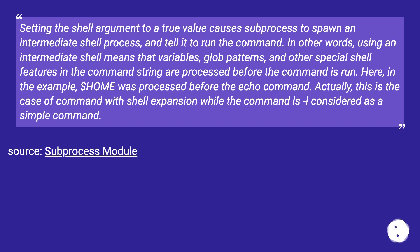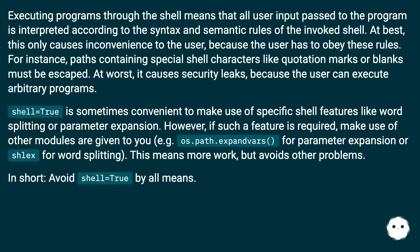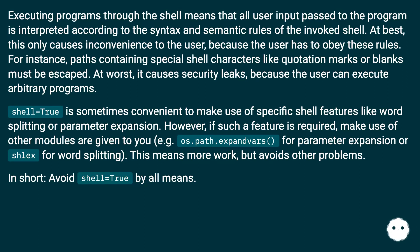Source: subprocess module. An example where things could go wrong with shell equals true is shown here. Check the doc for subprocess.call. Executing programs through the shell means that all user input passed to the program is interpreted according to the shell's syntax and semantics. For instance, paths containing special shell characters like quotation marks or blanks must be escaped. At worst, it causes security leaks, because the user can execute arbitrary programs.